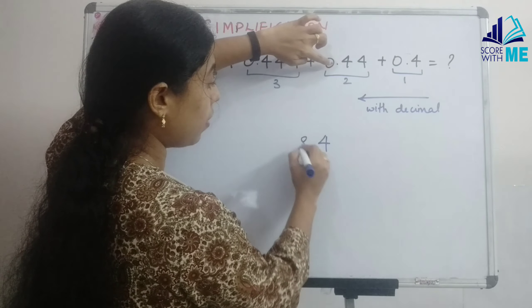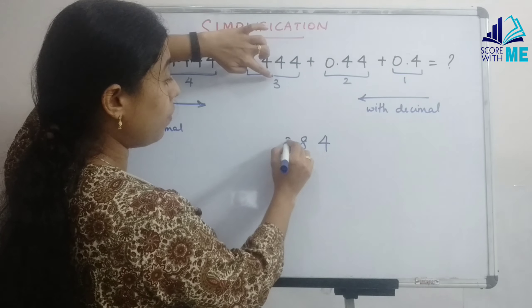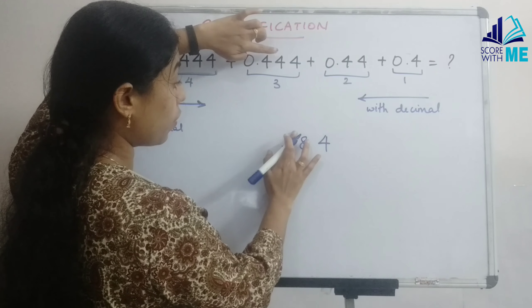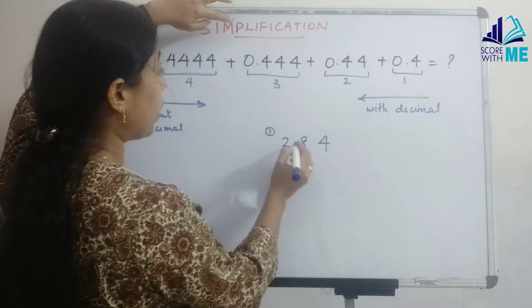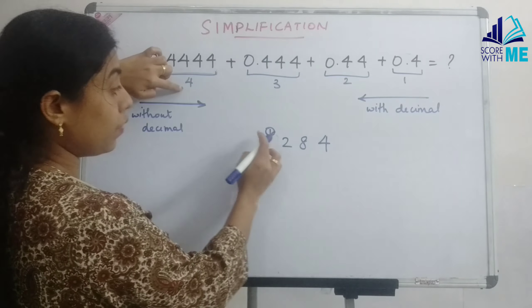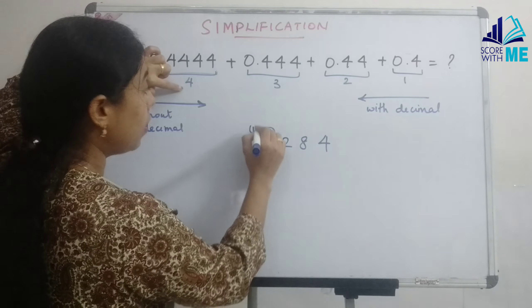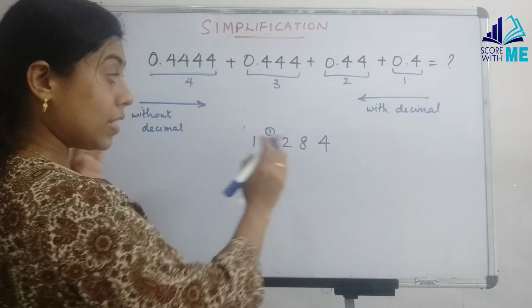4 into 2 is 8. We still don't have carry. Next 4 into 3 is 12, 1 carry over here. Next 4 times 4, 4 times 4 is 16. We had a carry over here, so that becomes 17. Since there is no more number, we need to write that here. So this is our answer.